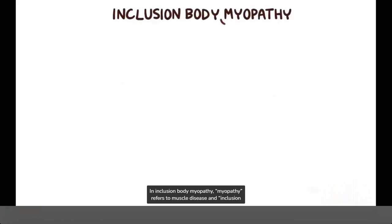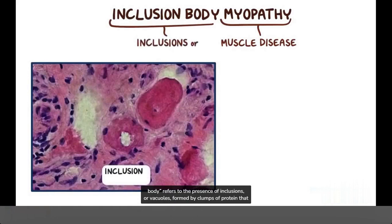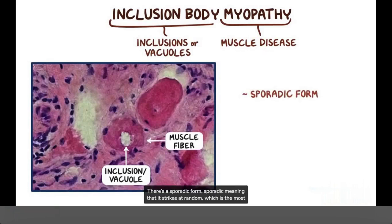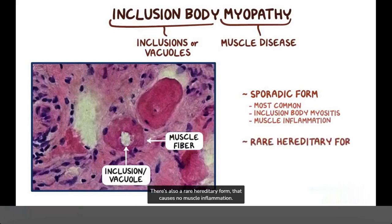In inclusion body myopathy, myopathy refers to muscle disease, and inclusion body refers to the presence of inclusions, or vacuoles, formed by clumps of protein that collect within the muscle fibers. There's a sporadic form, sporadic meaning that it strikes at random, which is the most common, and is also called inclusion body myositis because it causes muscle inflammation. There's also a rare hereditary form that causes no muscle inflammation.